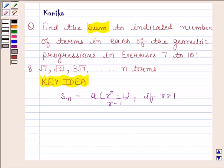Let us now begin with the solution. Given GP is root 7, root 21, 3 root 7 so on up to n terms. We have to find sum of n terms of this GP.